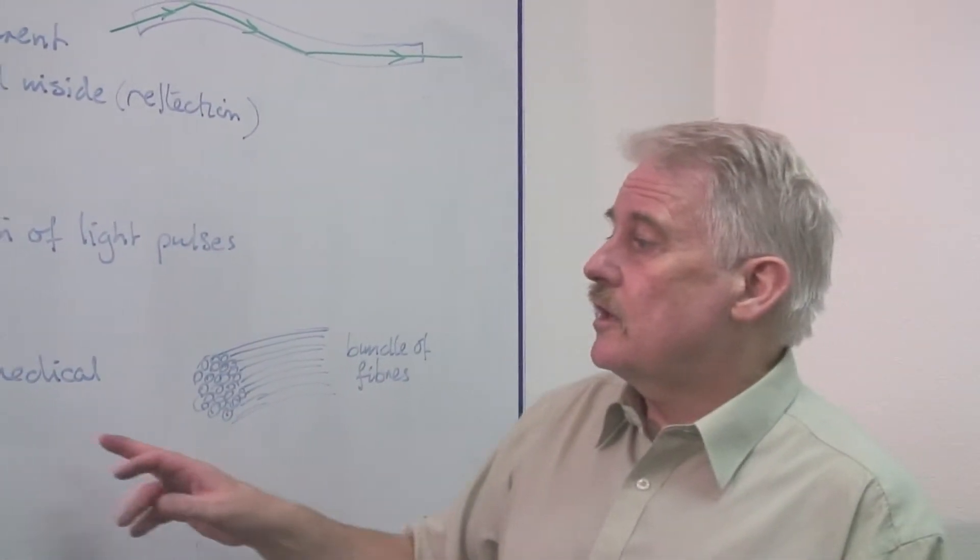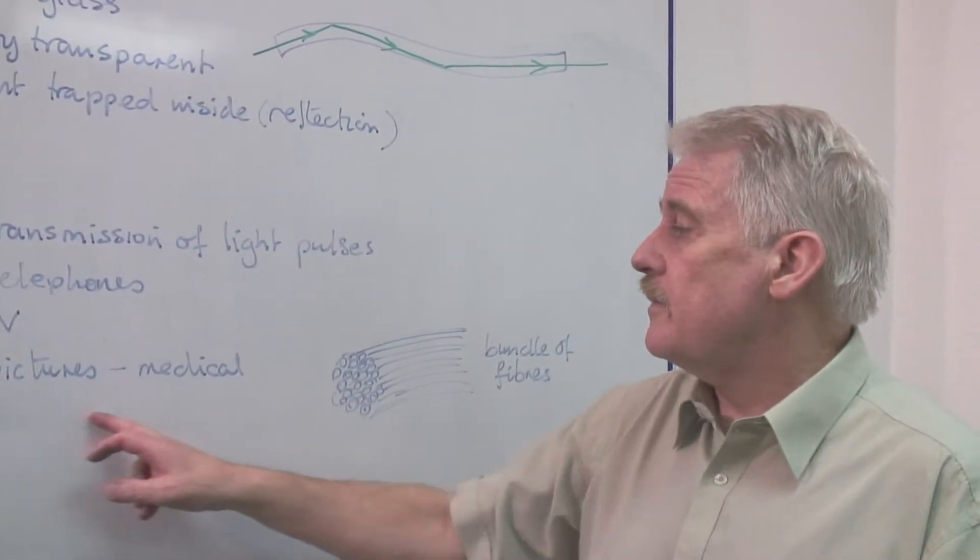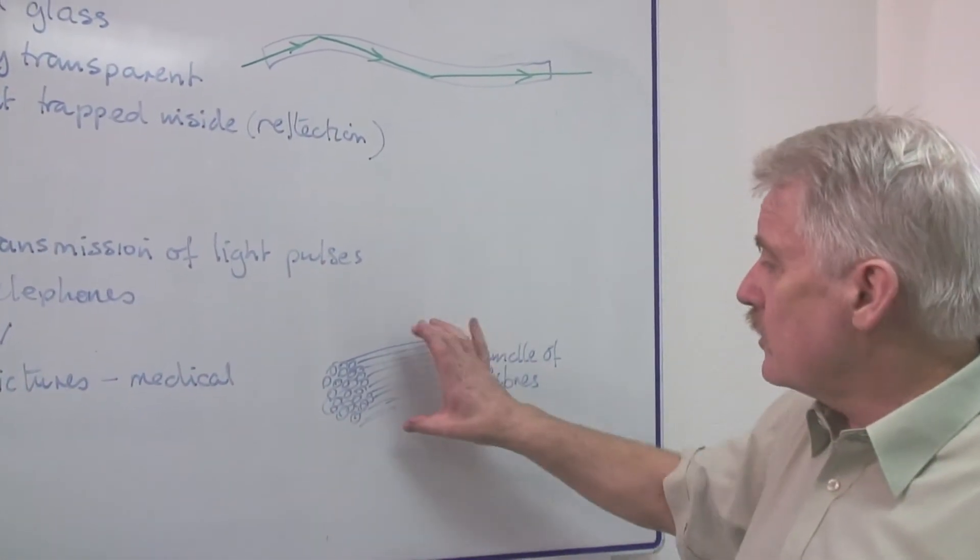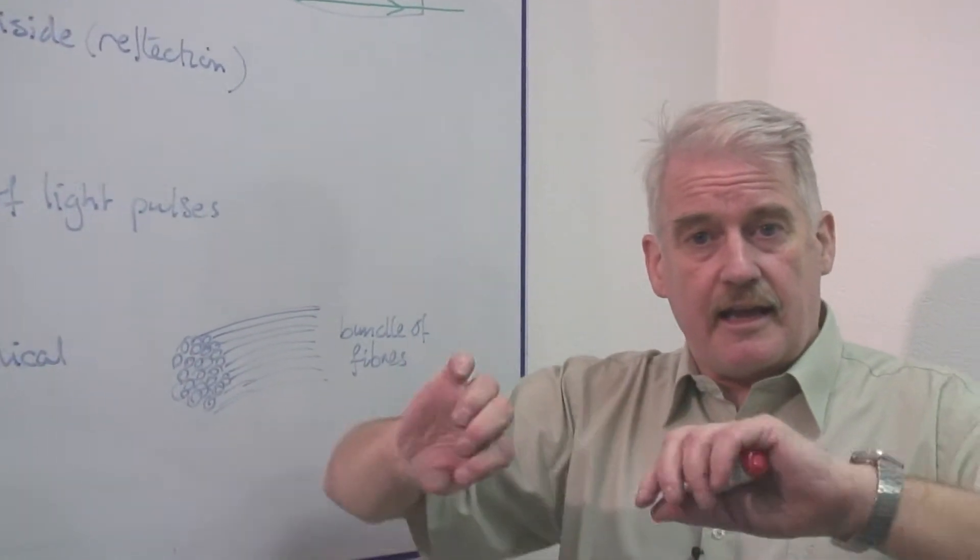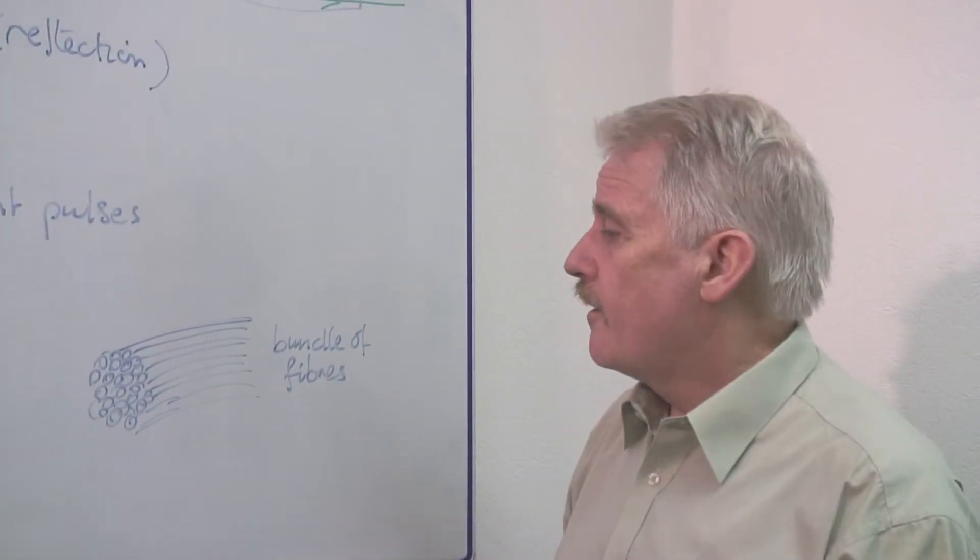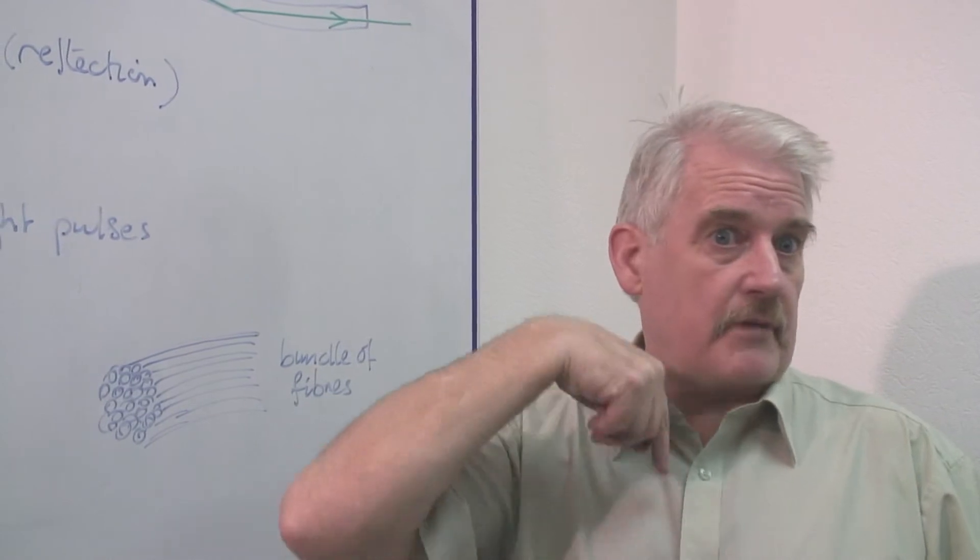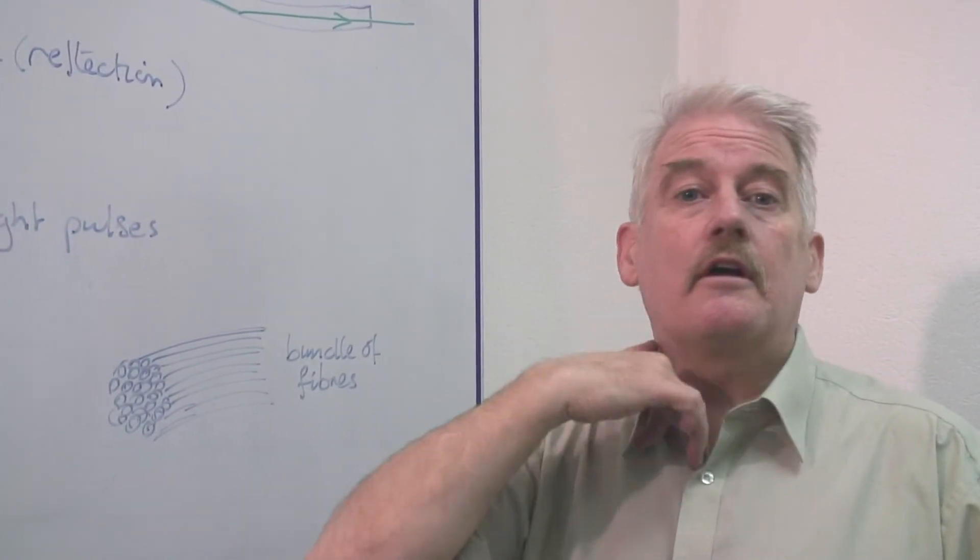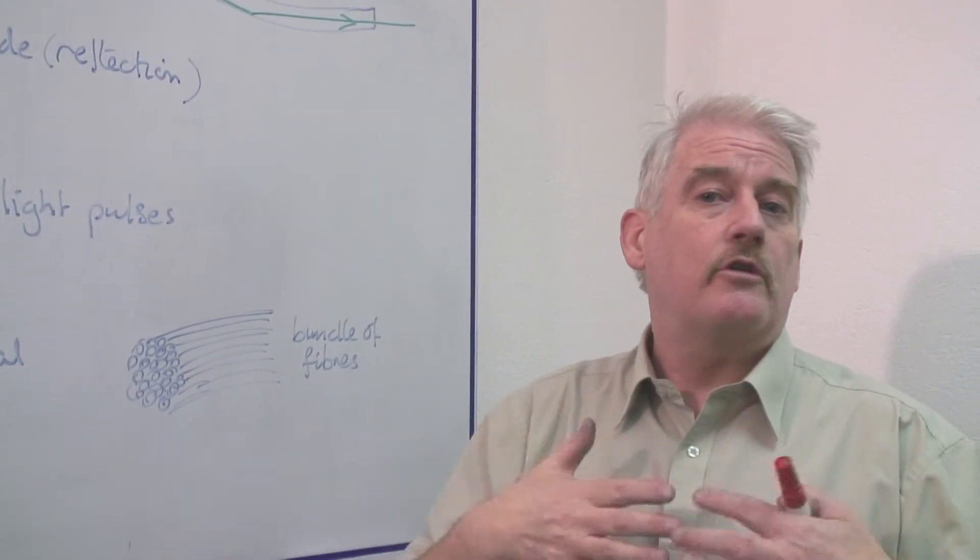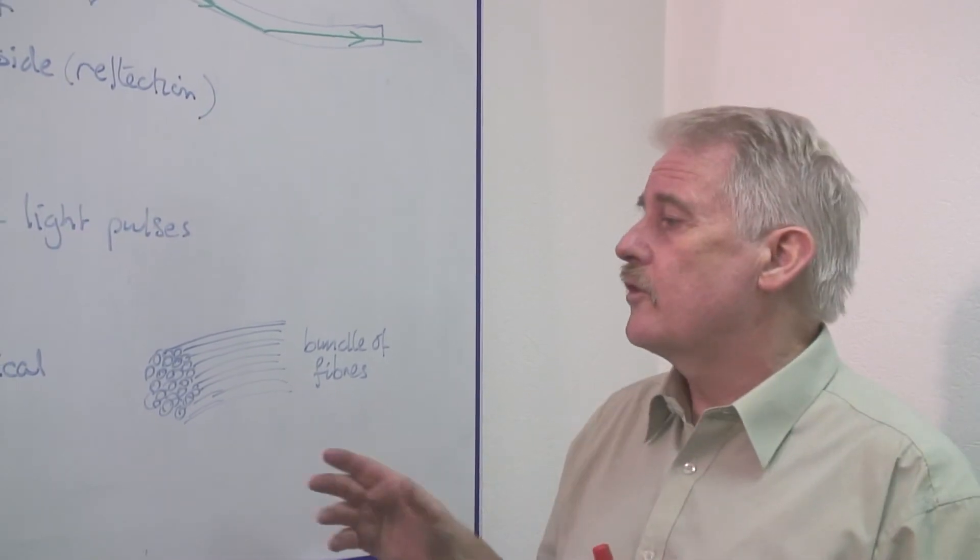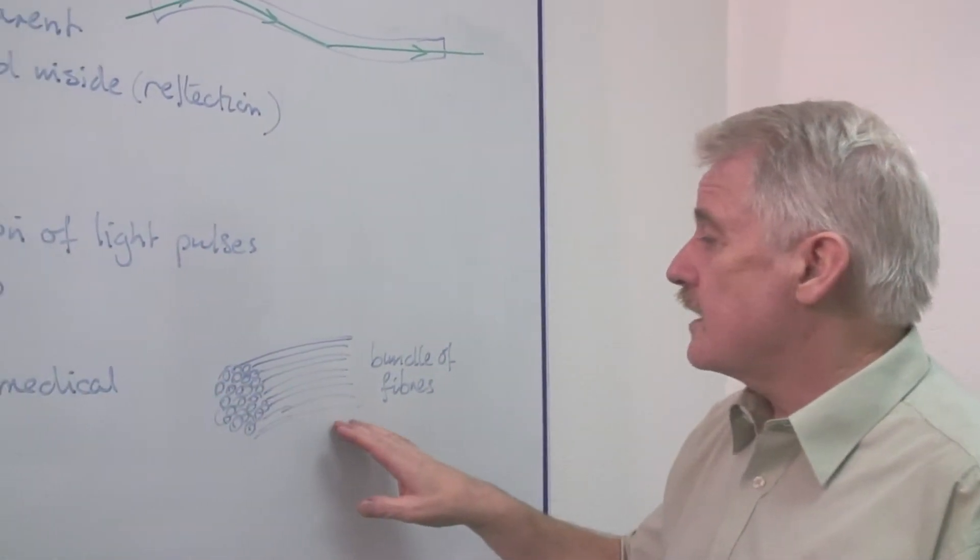Another use, and a particularly important one, is a medical use where bundles of optical fibres are put together and end up in quite a flexible tube. This can be put down inside people, down into the stomach or into the lungs, to look at the inside of the body.